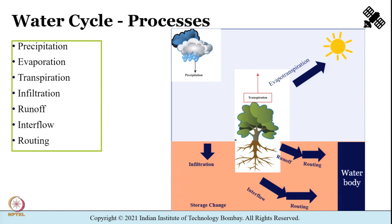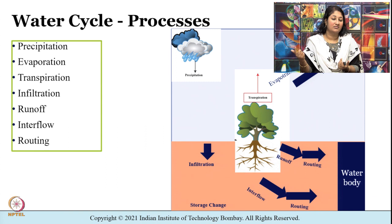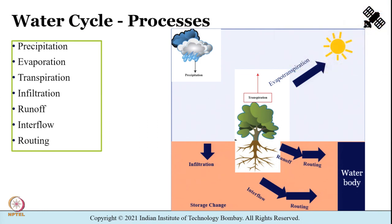The water cycle refers to the movement of water between ice, oceans, atmosphere and freshwater. It consists of several processes: precipitation — condensed atmospheric water falling to earth; evaporation — transition of liquid to gas; transpiration — movement of water within and out of plants into the atmosphere; infiltration — water entering the soil from the ground surface; runoff — flow of water from the earth surface; interflow — flow of water within the soil layers; and routing — movement of water downstream.